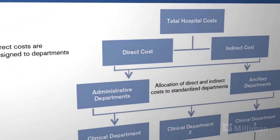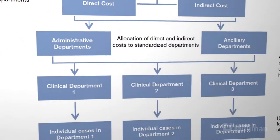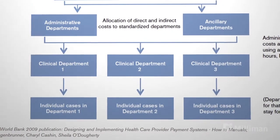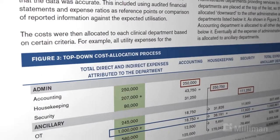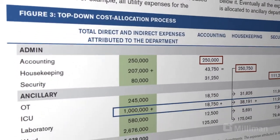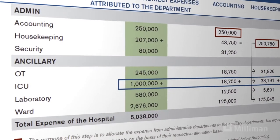The other approach is called top-down, where you look at the hospital's expenses and activity and average out everything. You look at how many thousands of dollars were spent and how many patients were treated, deriving a cost per day and cost per surgery using expenses rather than individual components. This is a more true reflection of the hospital's actual expenses, and more and more bilateral funding agencies and governments are relying on top-down as the preferred model.